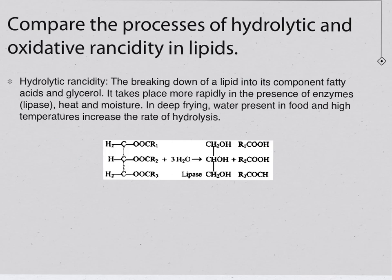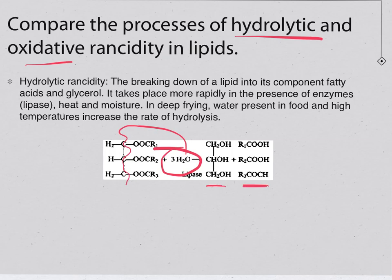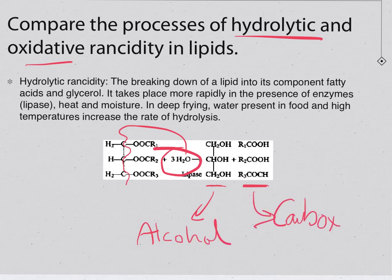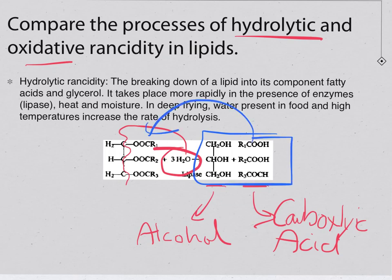Comparing hydrolytic and oxidative rancidity in lipids: in hydrolytic rancidity, water breaks apart the ester bonds in triglycerides, producing an alcohol and a carboxylic acid. That carboxylic acid is what creates the sour taste and lowers the pH. This is essentially the reverse of condensation polymerization, where a carboxylic acid and an alcohol were joined to form ester groups in the fatty acid chain.